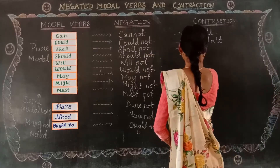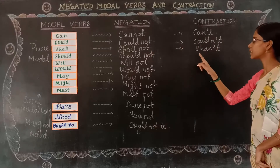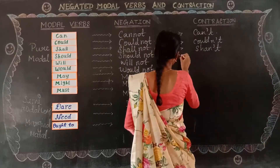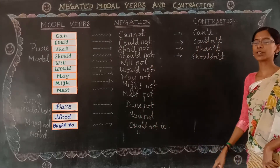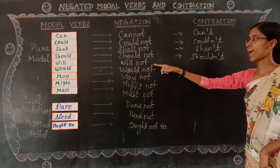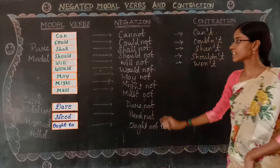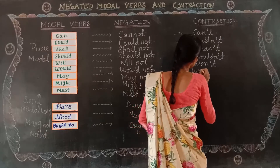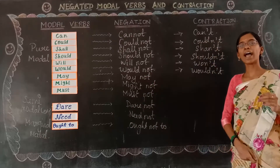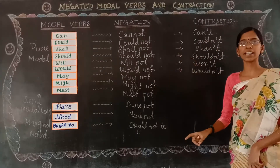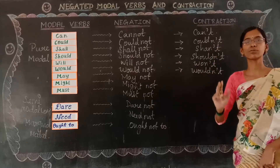'Shall not' can be written as 'shan't.' Note the difference — it is not written as is. 'Should not' becomes 'shouldn't' (should apostrophe T). 'Will not' is written as 'won't' — similar to shan't, it changes form. 'Would not' becomes 'wouldn't' (would apostrophe T). 'May not' and 'might not' do not have a contraction form — wherever you use them in a sentence, write them as 'may not' or 'might not.'